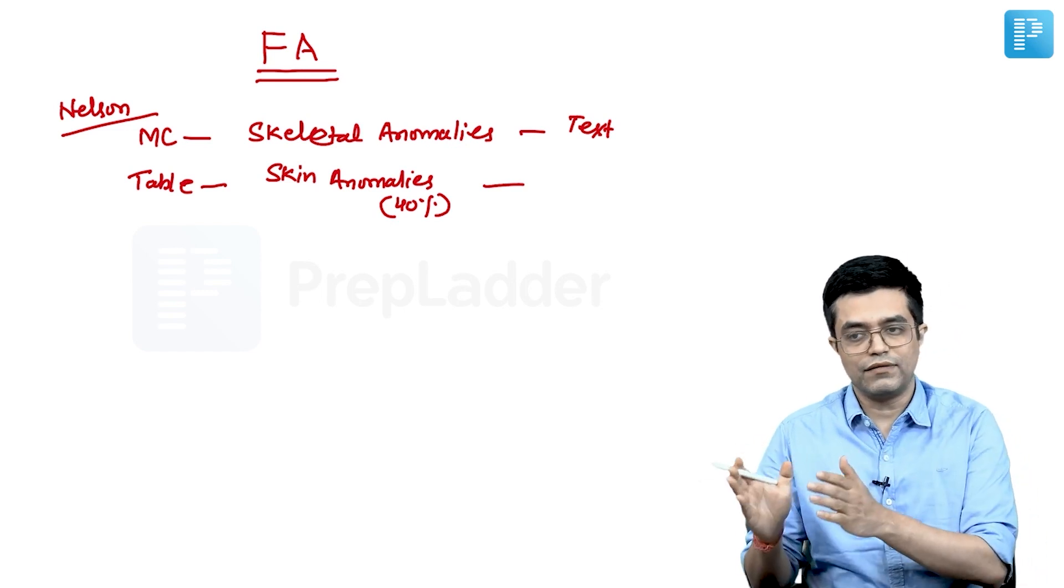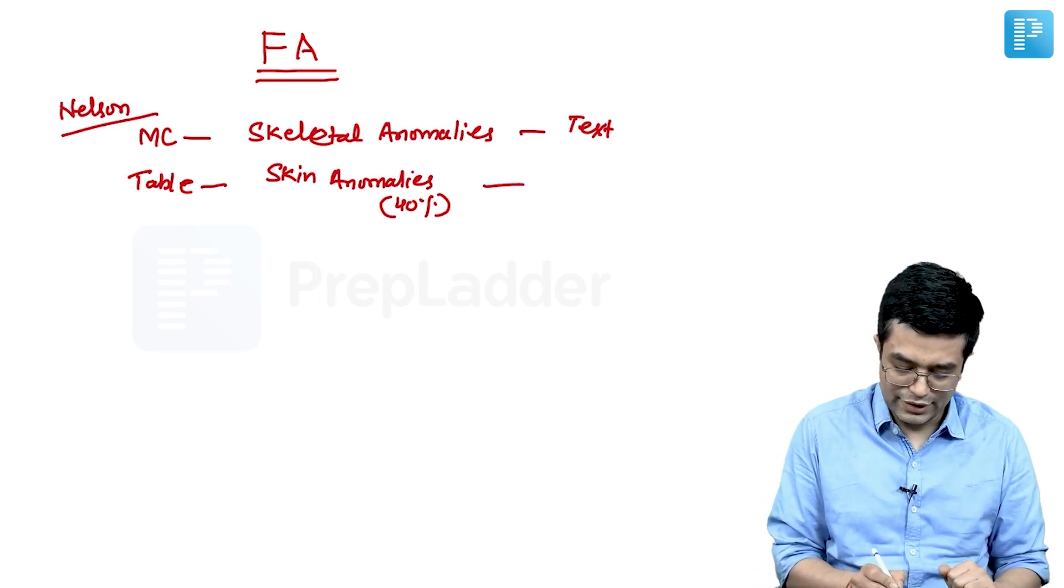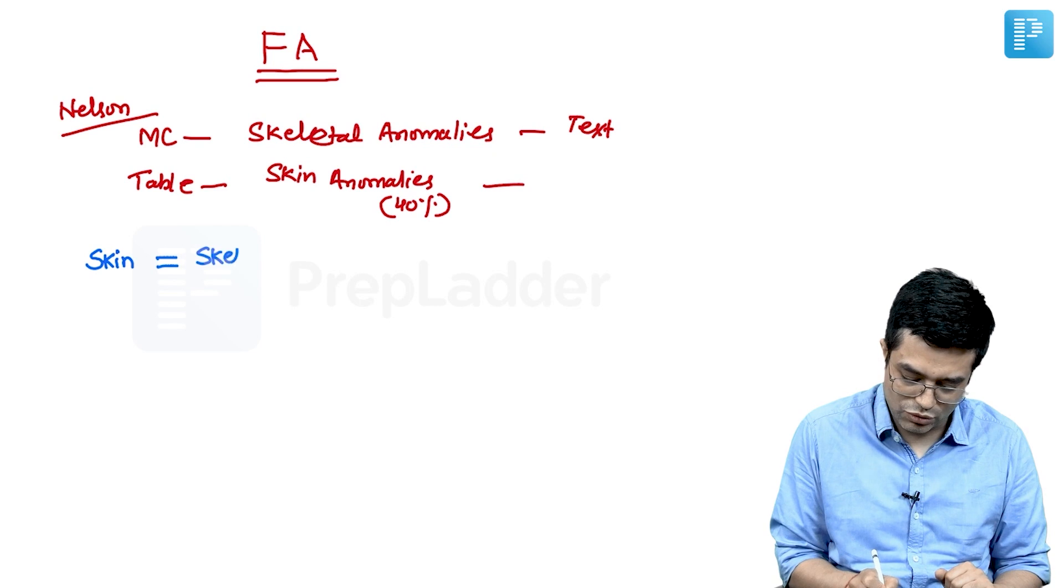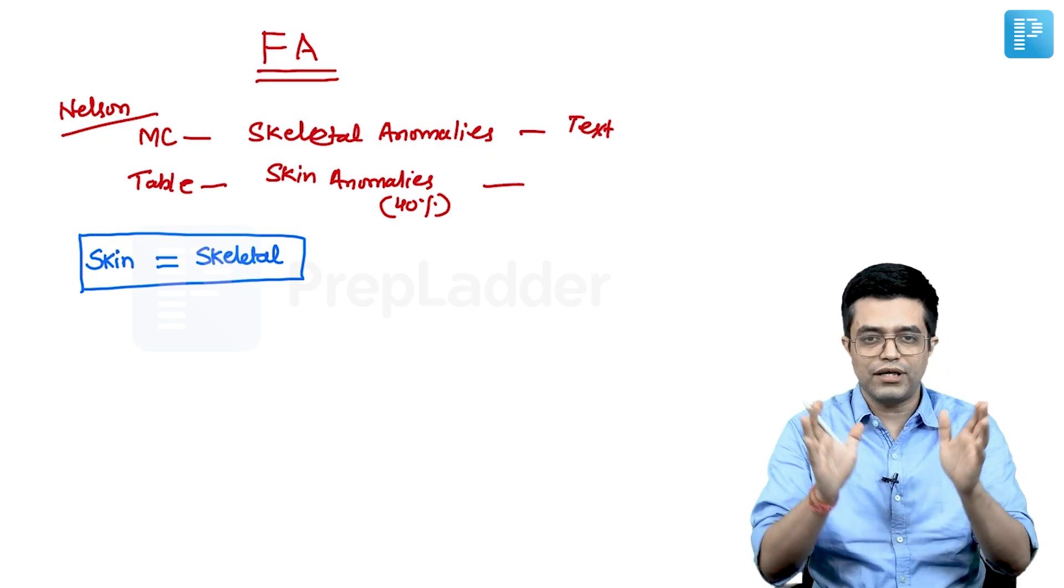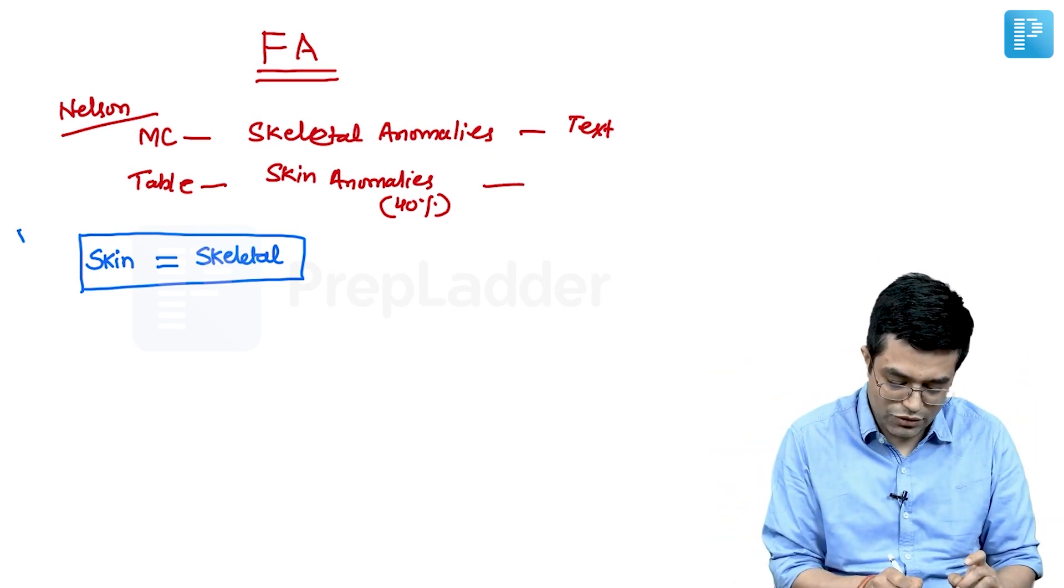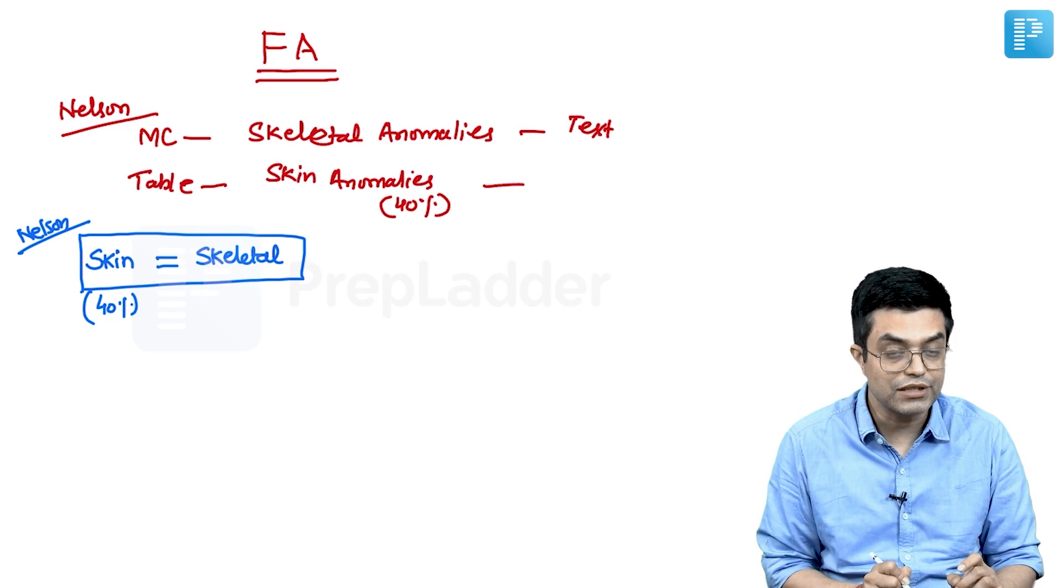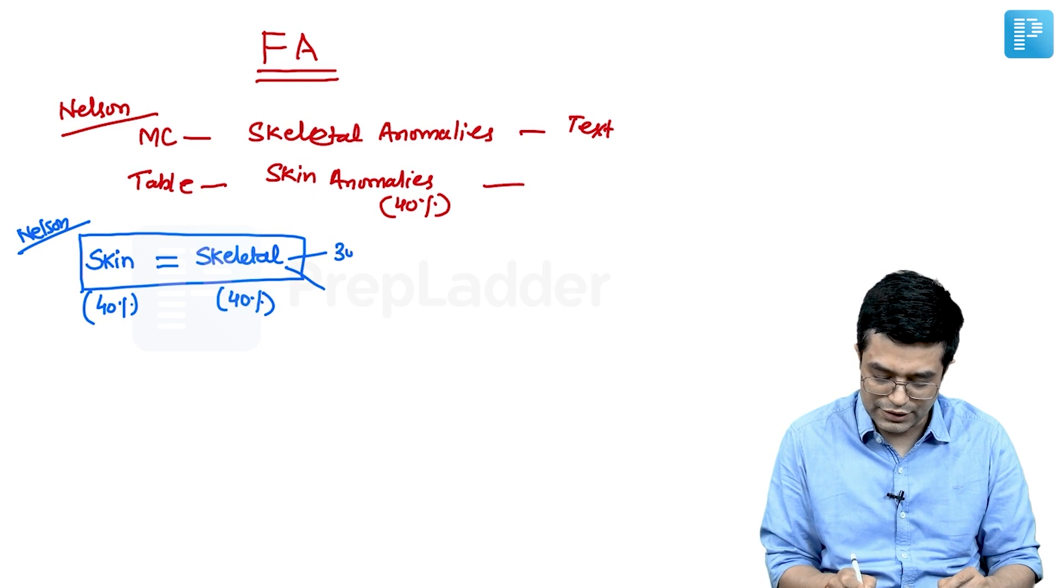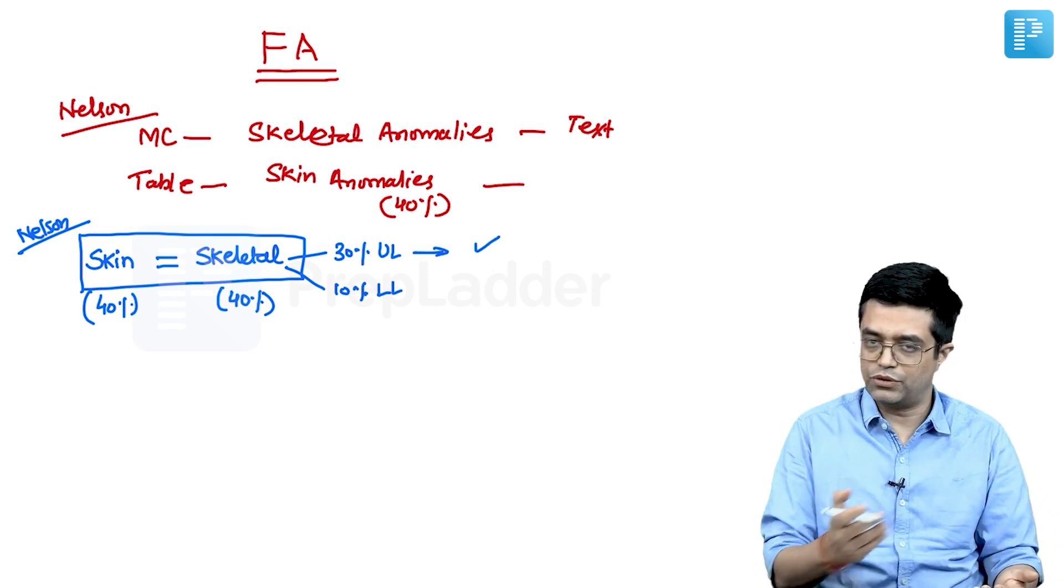If you read the entire text and various review articles, majority agree that both skin manifestations as well as skeletal manifestations tend to occur in almost equal incidence. Nelson says about 40 percent patients have skin manifestations and 40 percent have skeletal manifestations. Among skeletal, 30 percent involve upper limb and 10 percent lower limb. Radial and thumb defects are most common.